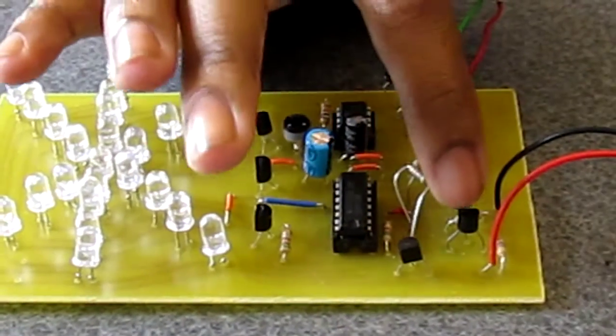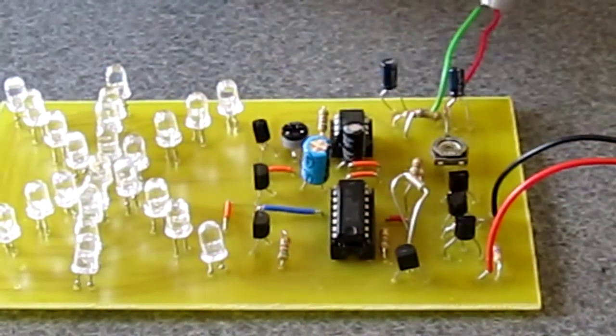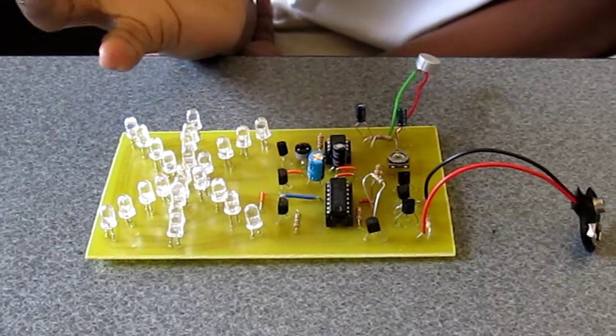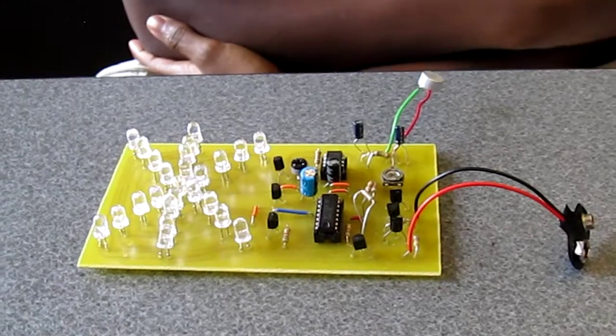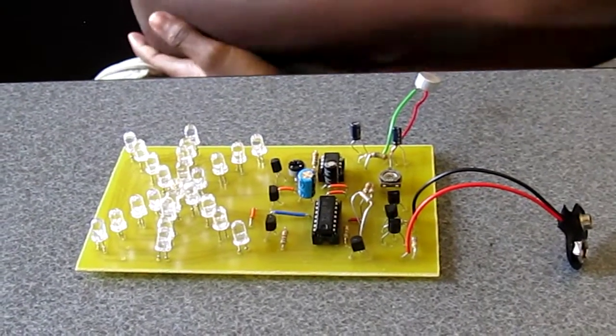These right here are normal resistors, and the main purpose of a resistor is to create conflict for a current, so the circuit won't be exposed to too much energy and malfunction.